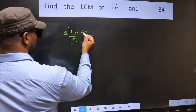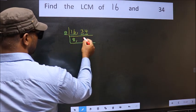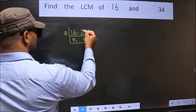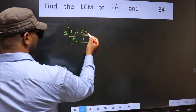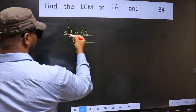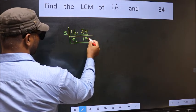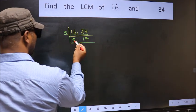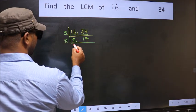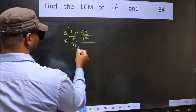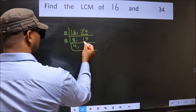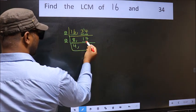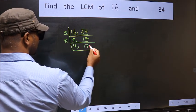First digit 3 — a number close to 3 in the 2 table is 2, remainder 1, carried forward: 14. When do we get 14 in the 2 table? 2, 7, 14. So 34 divided by 2 gives 17. Now here we have 8. The other number 17 is not divisible by 2, so we write it down as it is.